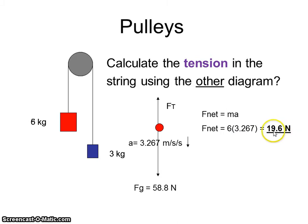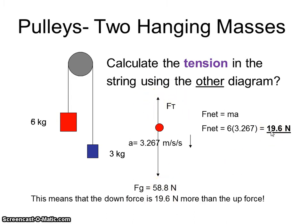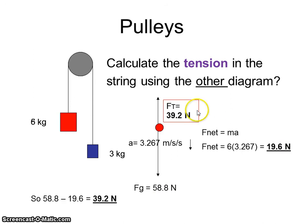What does this 19.6 represent? The difference between these forces. Since my up force is less than my down force by 19.6, I can get my up force to be 39.2.